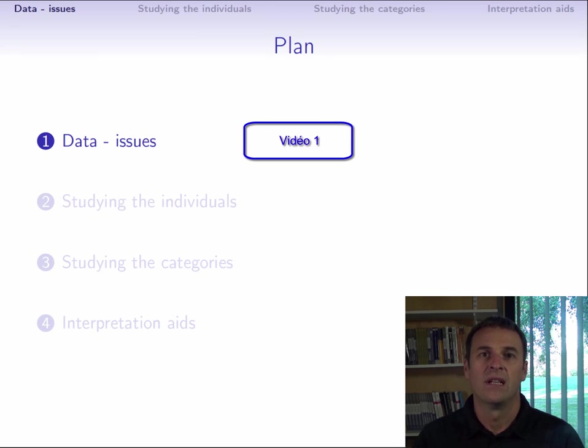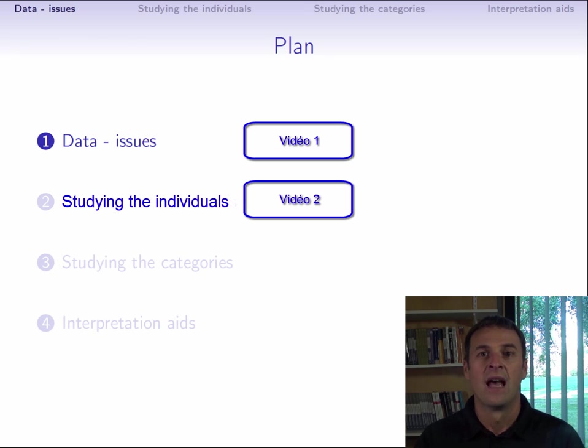In multiple correspondence analysis, as in any principal component methods, we are going to build point clouds, including point clouds of the rows and point clouds of the columns. In the MCA context, we are going to have a point cloud of individuals and a point cloud of categories. We will see how to visualize the point cloud of individuals and how to interpret it using the categories.